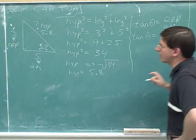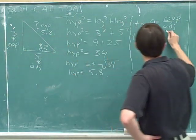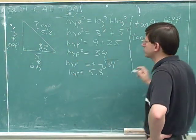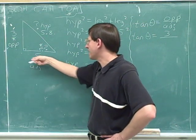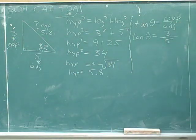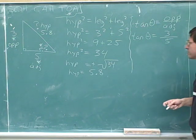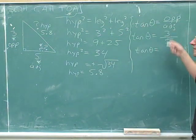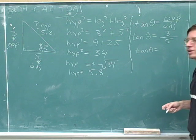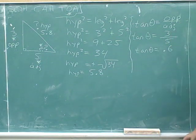What should we plug in for the opposite side? We know that this side has a length of 3. And what should we plug in for the adjacent side? That had a length of 5. So the tangent of theta is 3 fifths. You can figure out what 3 fifths is on your calculator — it's 0.6. So the tangent of theta is 0.6.